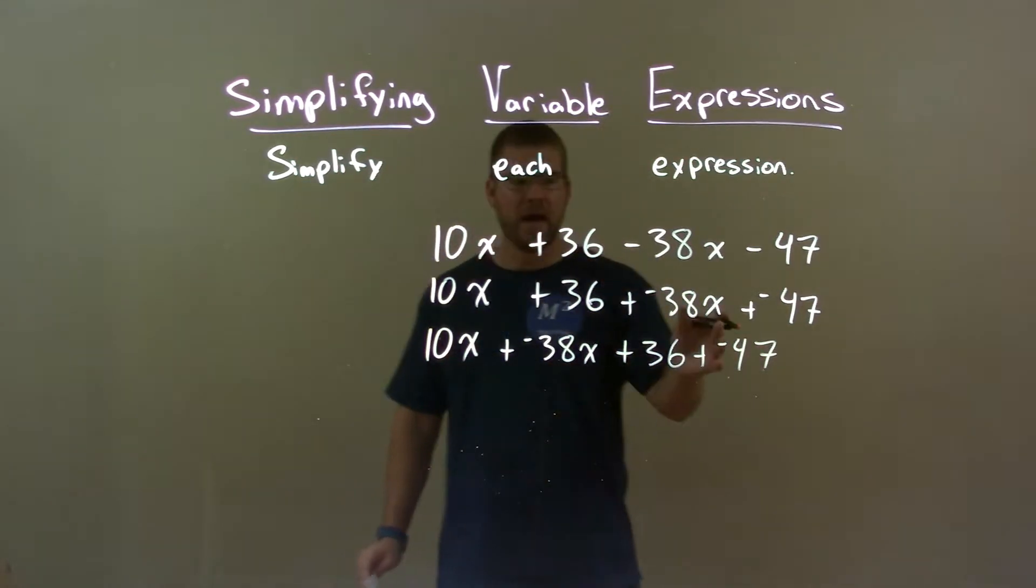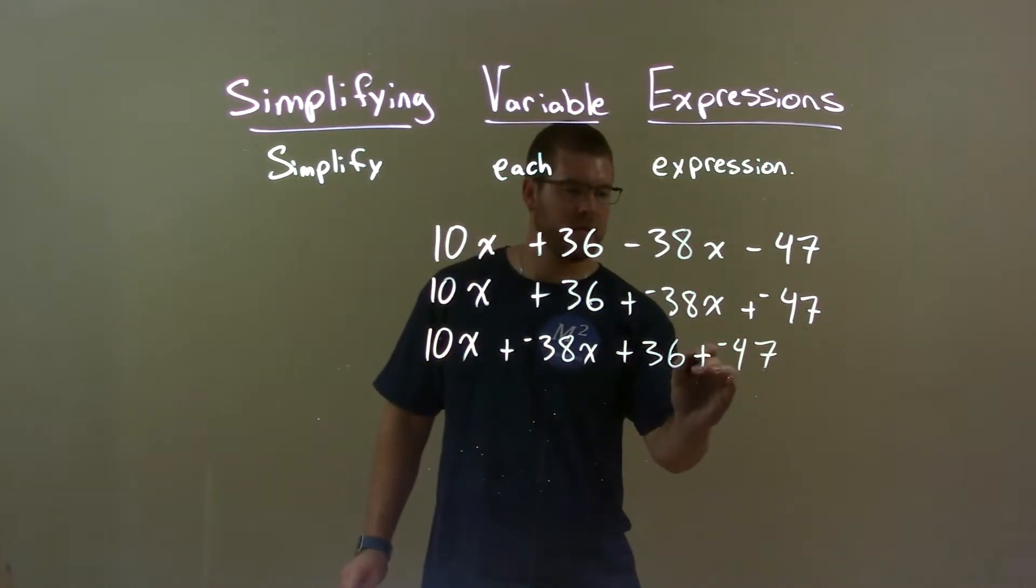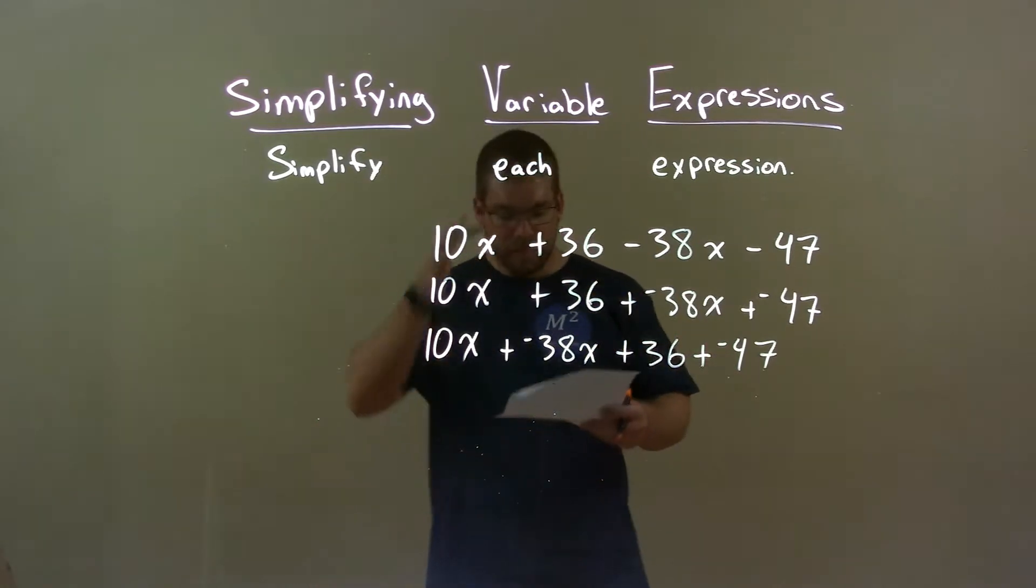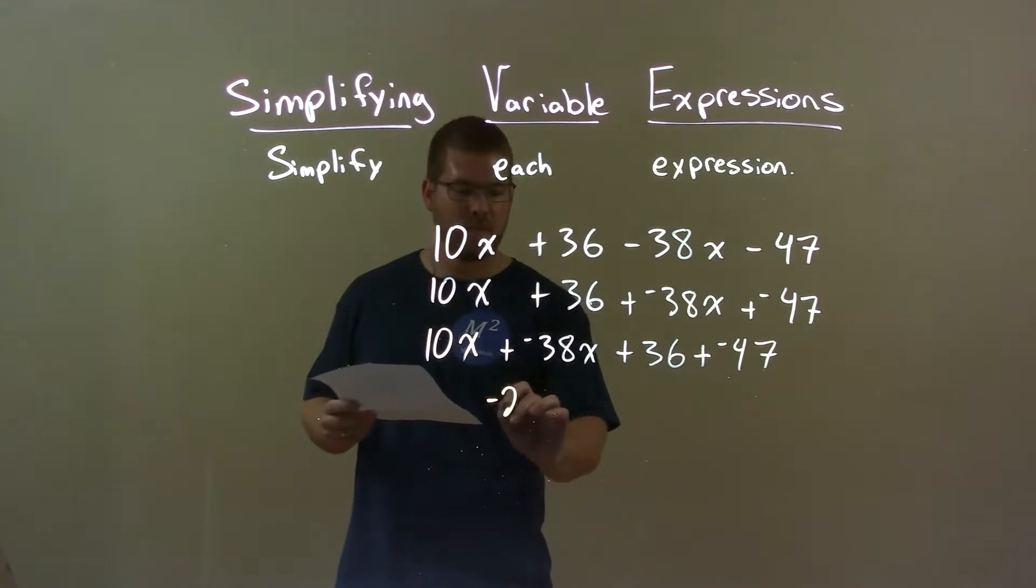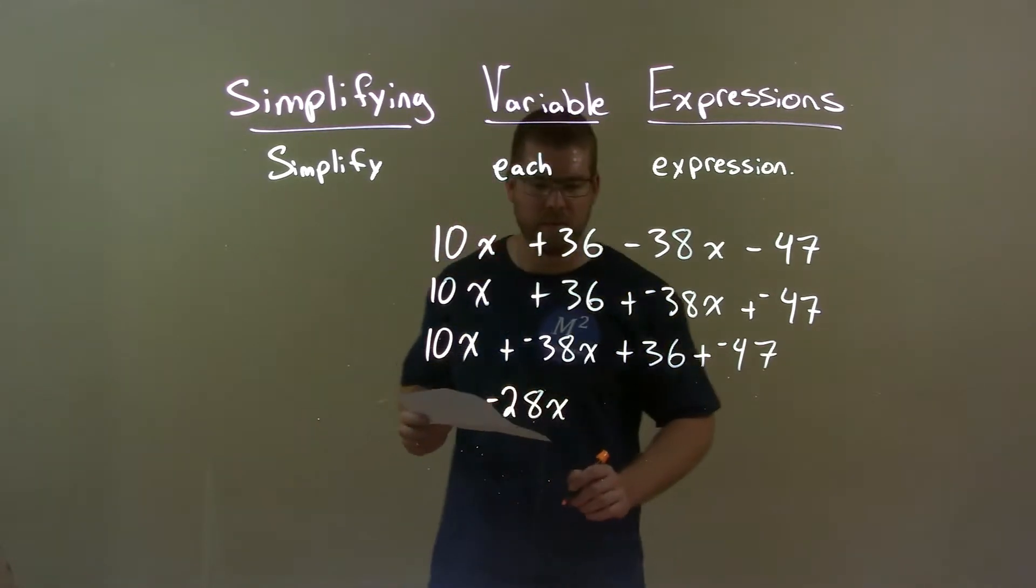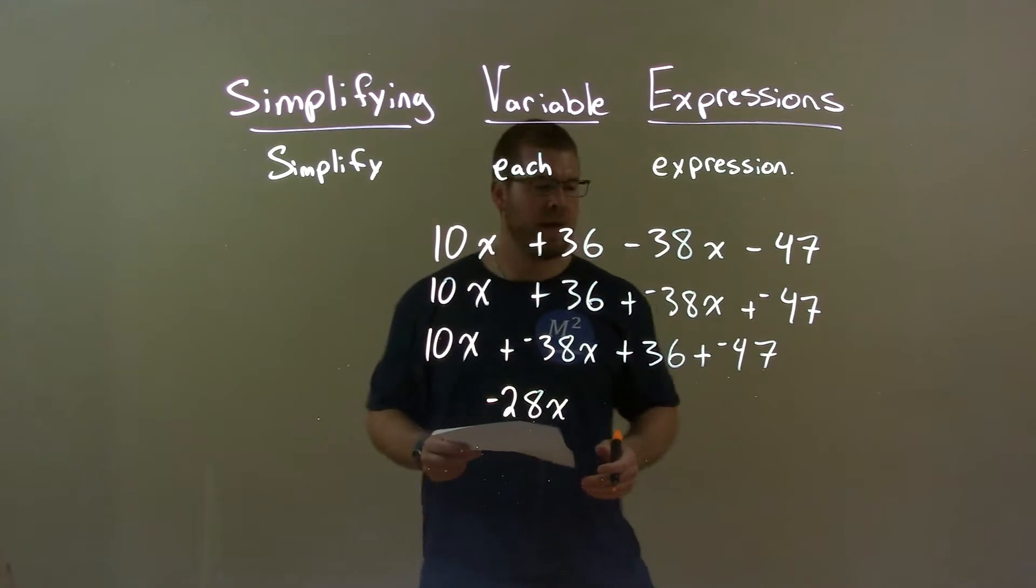Now, let's combine our like terms here. Well, 10x plus a negative 38x is a negative 28x. So we have a negative 28x here.